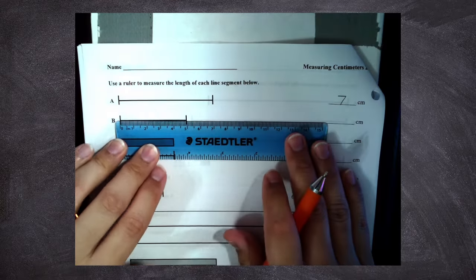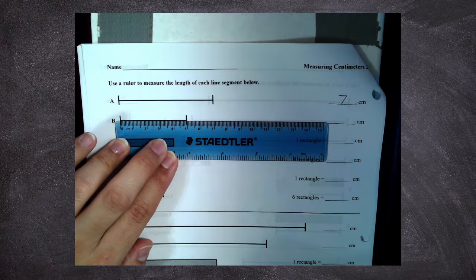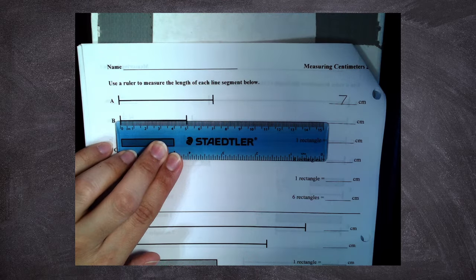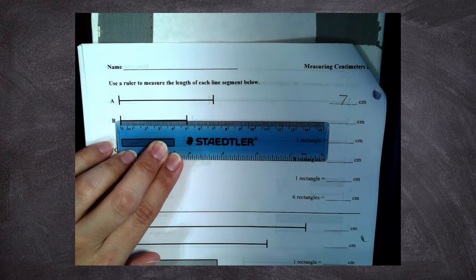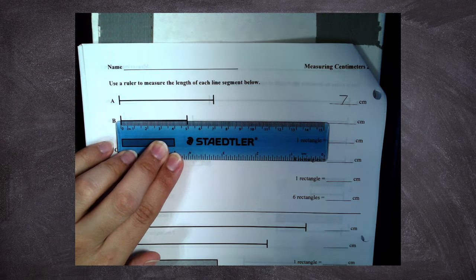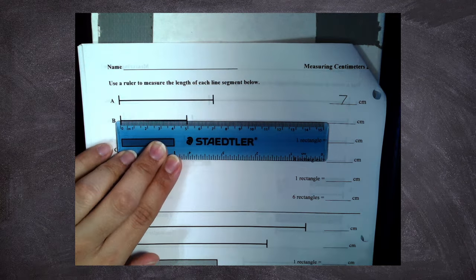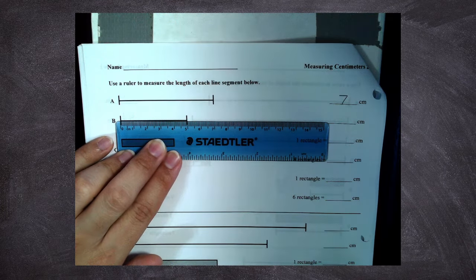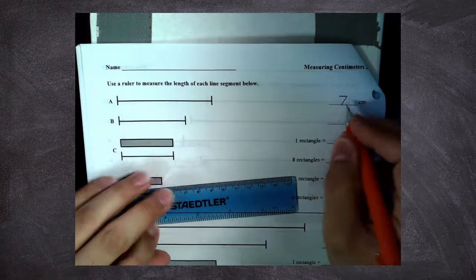Okay, check the second line, B. I'm still using centimeters. How many centimeters is line B? How many centimeters long is line B, Kylie? Five. Five. Five centimeters.